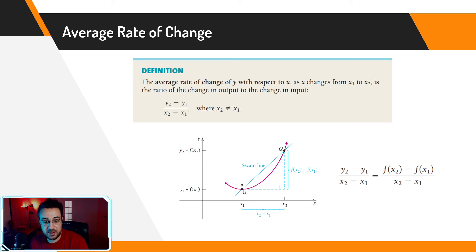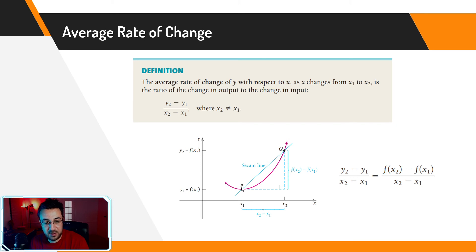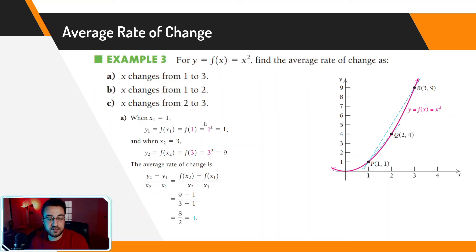Looking at a graph with two points in the Cartesian xy-plane: y₁ represents f(x₁) and y₂ represents f(x₂). To find the slope of the secant line — the straight line drawn between point P and point Q — you apply (y₂ − y₁) / (x₂ − x₁), which is the same as (f(x₂) − f(x₁)) / (x₂ − x₁), since y = f(x).